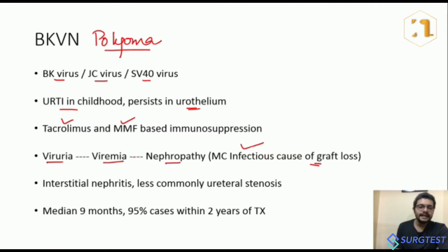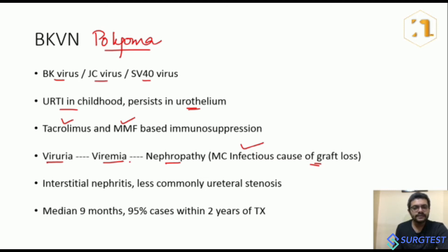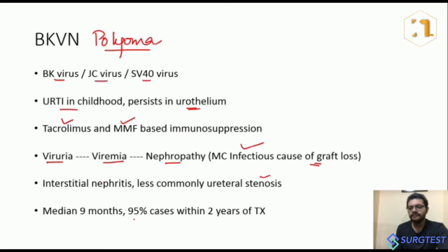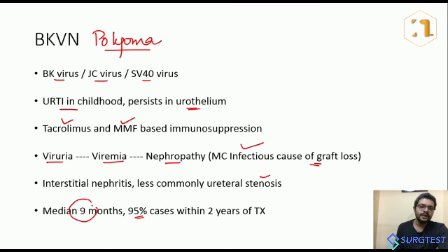In the kidney, BK virus causes interstitial nephritis. Less commonly, it can cause ureteritis, which can lead to ureteral stenosis. Most cases of BK virus nephropathy occur before two years post-transplantation — 95% of cases occur within two years post-transplantation. The median onset given in Brenner's textbook is nine months, so it is mostly seen in the first transplantation year, as in our MCQ scenario.